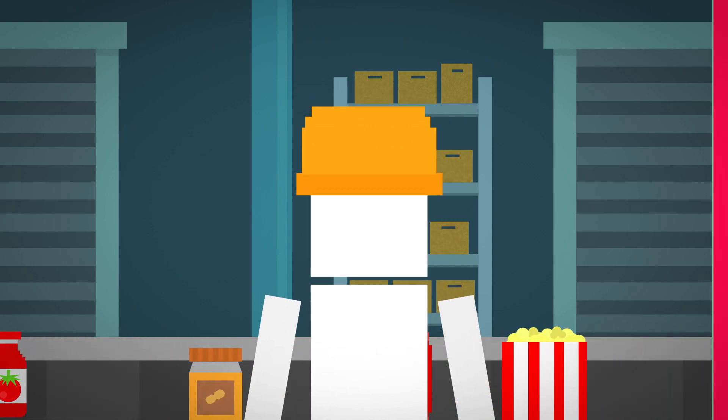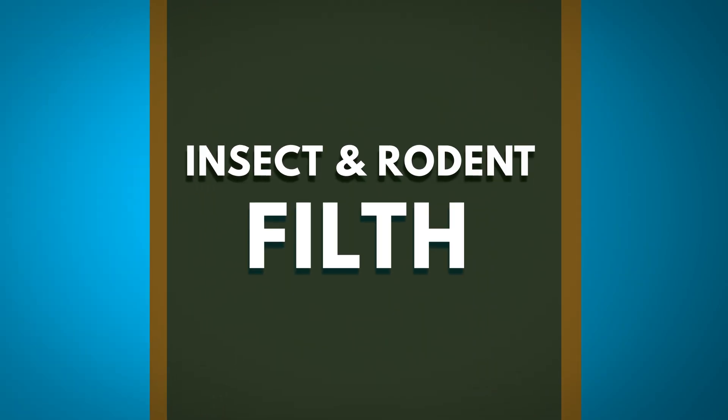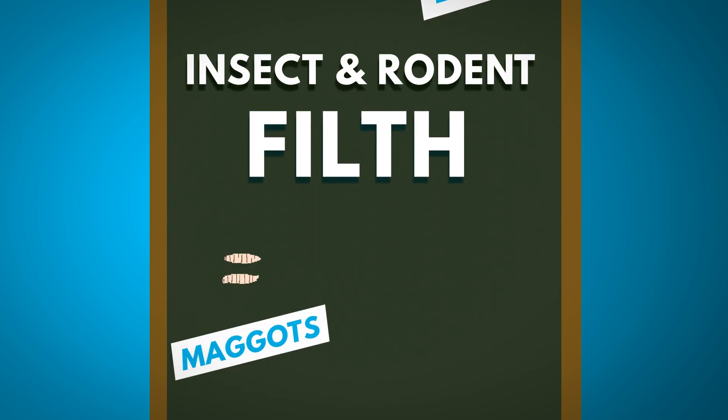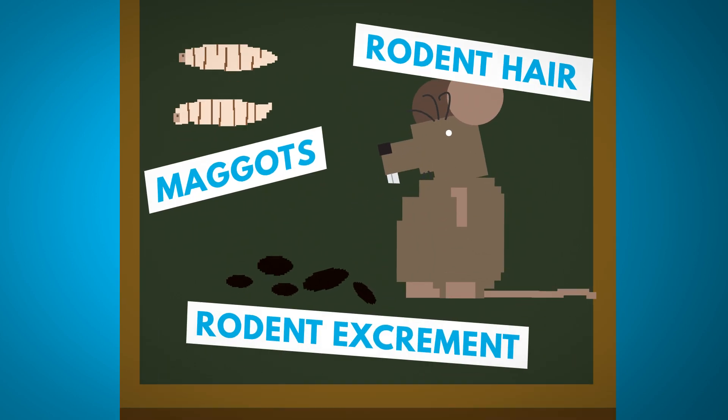This gross category includes insect and rodent filth, which are insect fragments, eggs, maggots, rodent hair, and even rodent excrement. Yay!